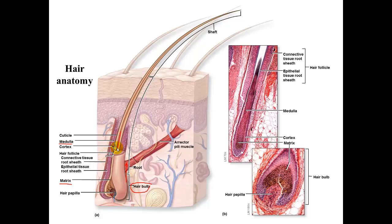There are three zones along the length of the hair. The hair bulb surrounds the hair papilla, which is composed of connective tissue and is vascularized with arteries and veins. The root is the portion of the hair deep to the skin surface, and both the root and bulb consist of dead epithelial tissue. Finally, the shaft is the portion extending beyond the skin surface — what we normally see — and it is the only region containing living epithelial cells.